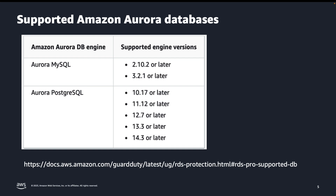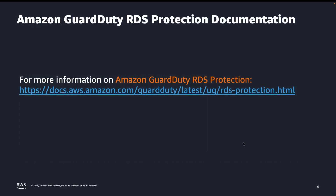Something to note is that RDS Protection in Amazon GuardDuty analyses and profiles RDS login activity for potential access threats for the currently supported Amazon Aurora MySQL and PostgreSQL database engine versions. You may wish to visit the provided link for future up-to-date database engine versions. I have explained the Amazon GuardDuty RDS Protection feature and showed a brief walkthrough of example findings generated by Amazon GuardDuty. Thank you for your time, and make sure to consult the Amazon GuardDuty documentation for more information on RDS Protection.